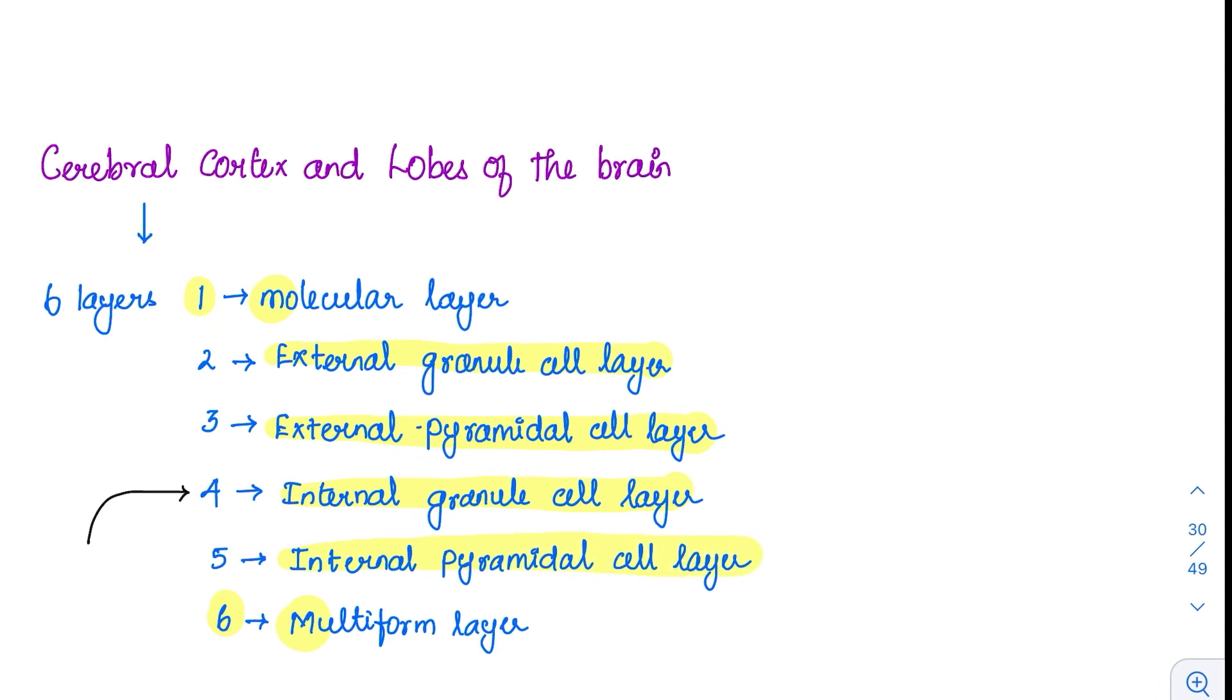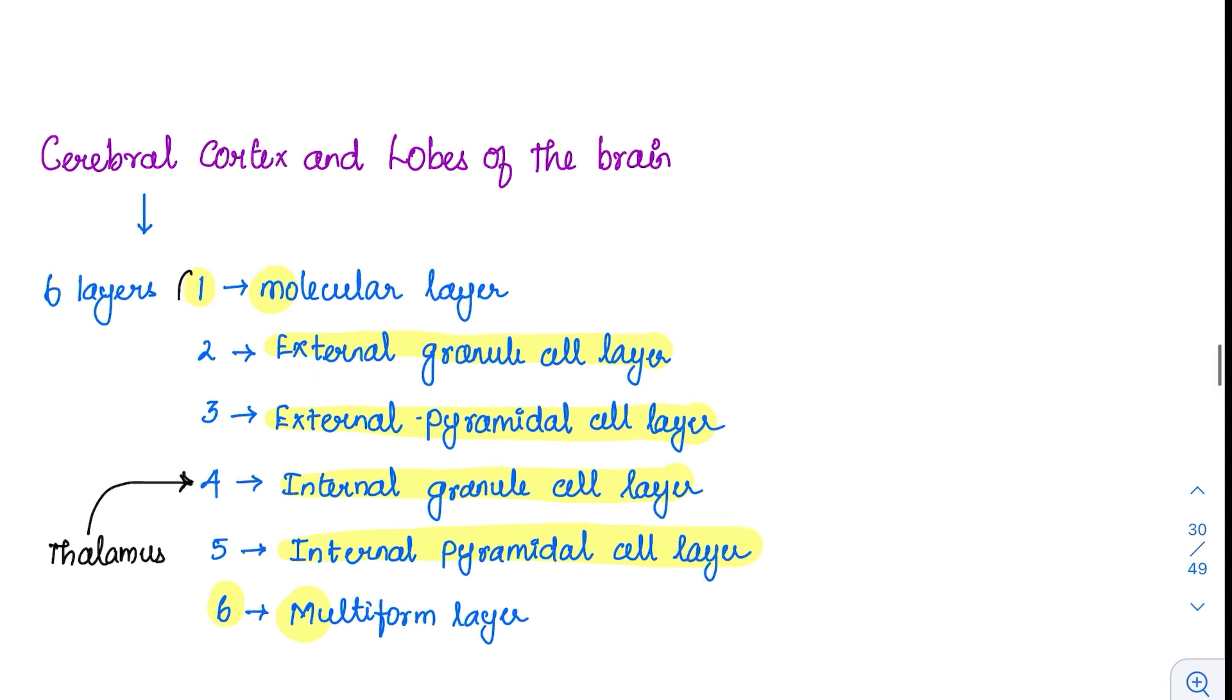Out of this, the specific nuclei from the thalamus always reaches the area or the layer number four. From the thalamus, they specifically reach the area four. Other nuclei from the thalamus or various multiple nuclei can reach the first four layers also, but layer four is the most important one for the thalamic entry or the thalamic endpoints.